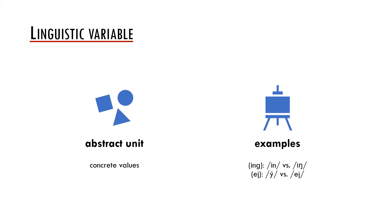For example, we may have the ing variable which can have two values, either alveolar in or velar ing. In Czech we have the a variable which can take either value e or value a. Importantly, the values or variants of a linguistic variable have the same or close meaning. From the purely semantic point of view, the values of a variable should be interchangeable.